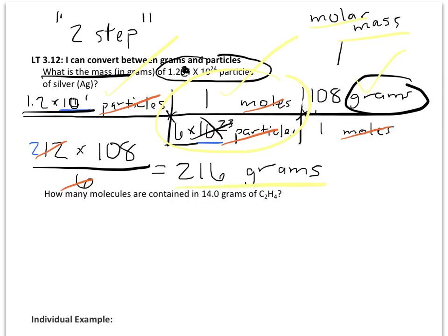Now, in the second example, it asks us how many molecules are in 14 grams of C2H4. So, we can see we're going in the opposite direction. We always write down our known value, so 14.0 G for grams.